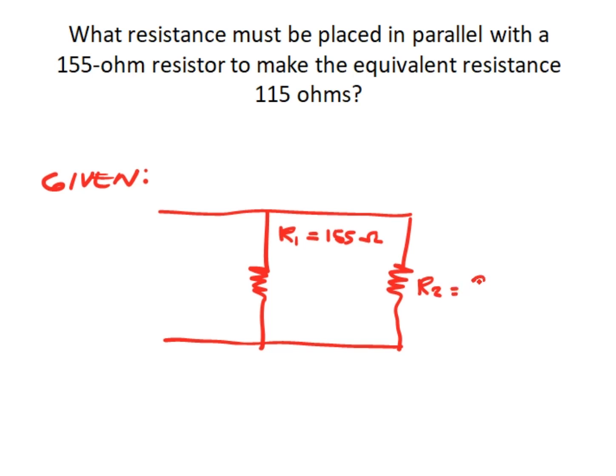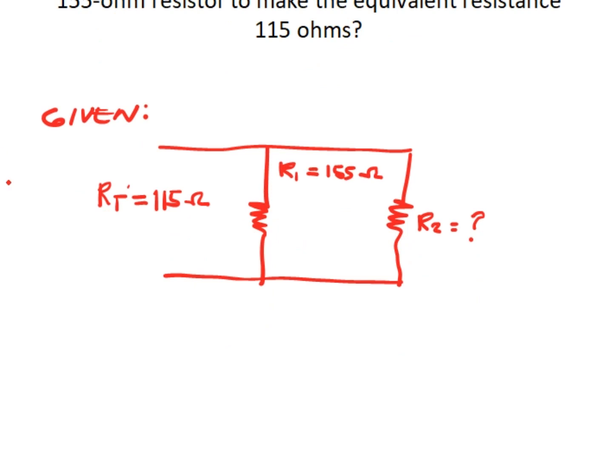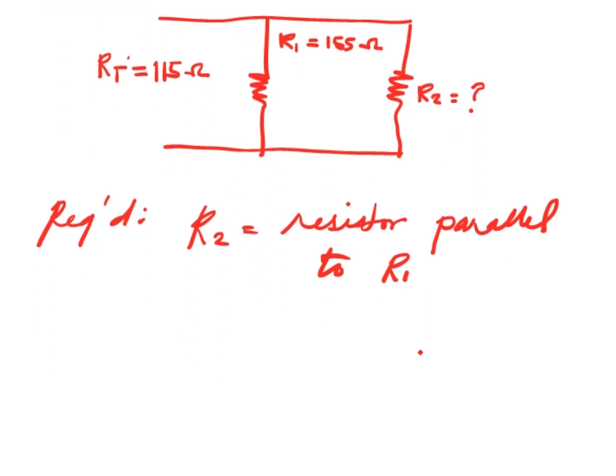We are being asked for R2 so that the R total is 115 ohms. So we are required to get R2, the resistor parallel to R1. Now since this is a parallel circuit, from our equation for total resistance...